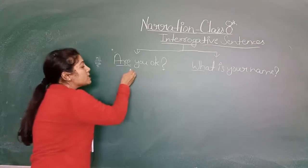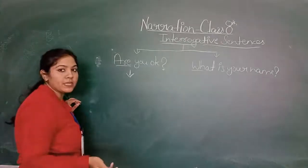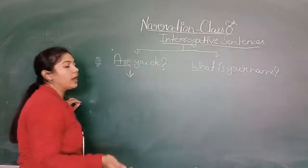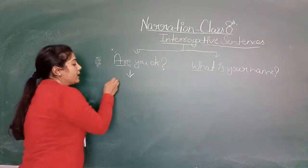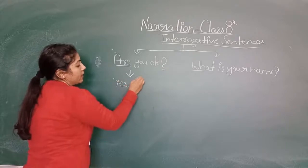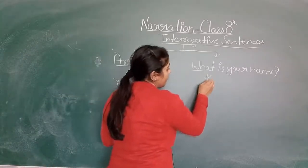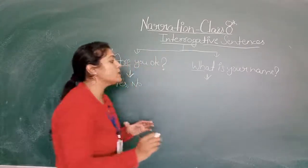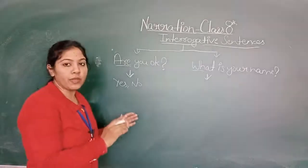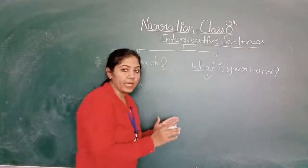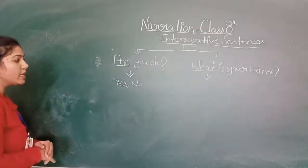Now for auxiliary-verb questions, the answer is yes or no. Someone asks 'Are you okay?' — the answer is yes or no. If you are not okay then you say 'I am not okay.' So this type gives a yes or no answer. But for WH-word questions, we have to give complete details. Suppose someone asks 'What is your name?' — you give your full name as the answer.